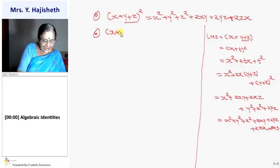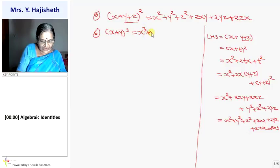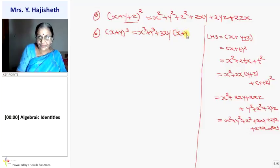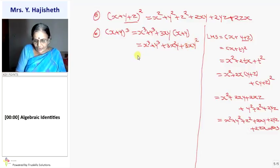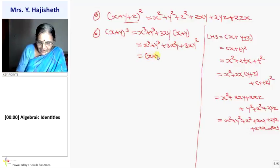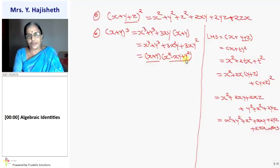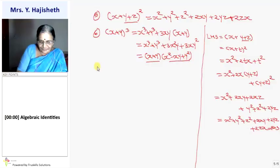Sixth formula: x plus y whole cube equals x cubed plus y cubed plus 3xy times (x plus y). Opening it: x cubed plus y cubed plus 3x squared y plus 3xy squared. Another way of writing this using factorization: x cubed plus y cubed equals x plus y into x squared minus xy plus y squared. These are the two factors of x cubed plus y cubed.